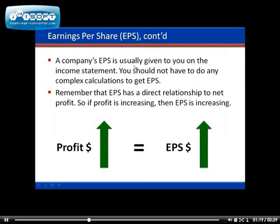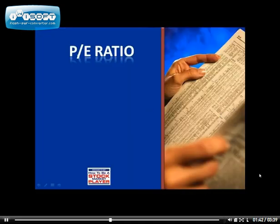A company's earnings per share is usually given to you on the income statement, so you do not have to do any complex calculations. Earnings per share has a direct relationship with net profit — if profit is increasing, then the earnings per share is also increasing.